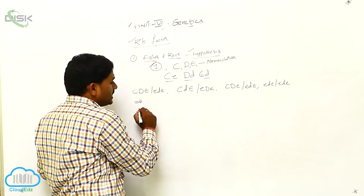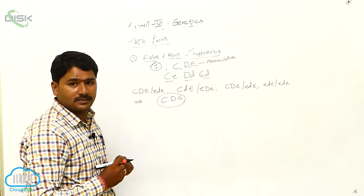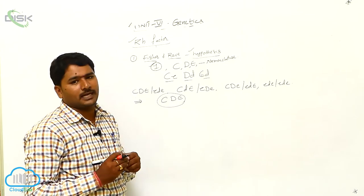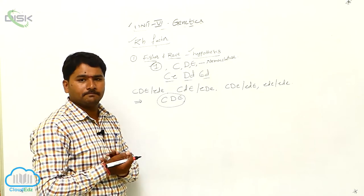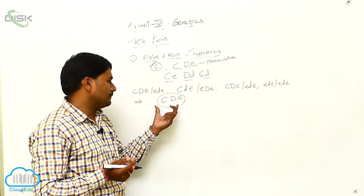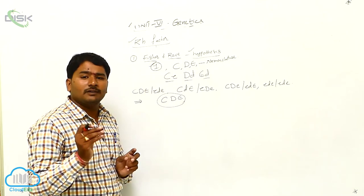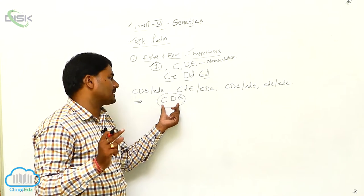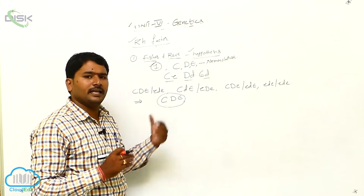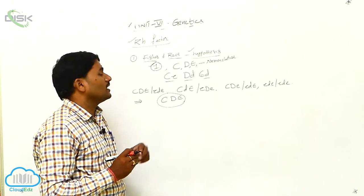As per Fischer, individuals with any one of the three dominant alleles — capital C, capital D, or capital E — will produce the RH antigen. Any dominant allele C, D, or E that is present means that individual is possessing or expressing the RH factor.